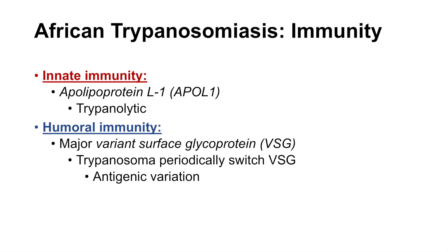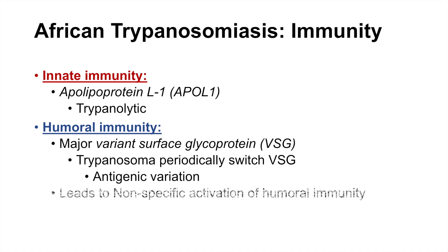We call this antigenic variation, and it leads to non-specific activation of humoral immunity. As the body continually attempts to target the variant surface glycoprotein, the Trypanosoma can switch the VSG and evade the infected person's humoral immunity response.